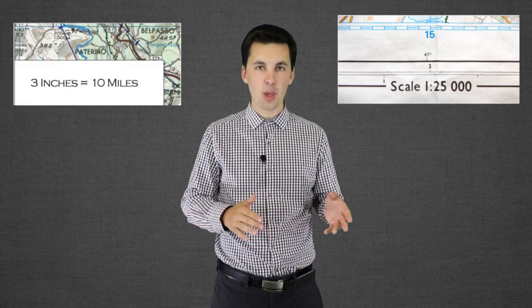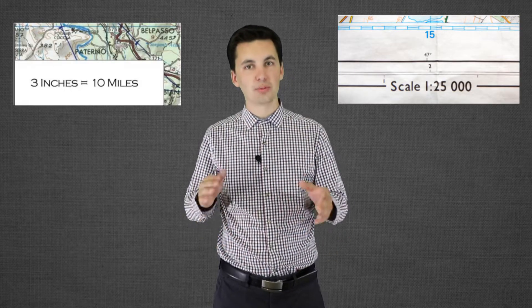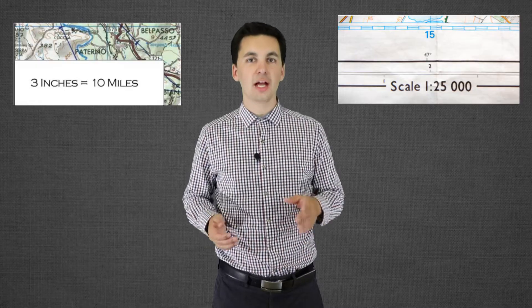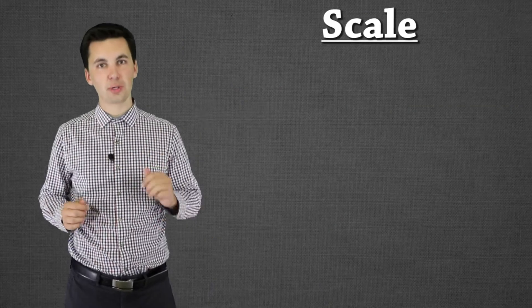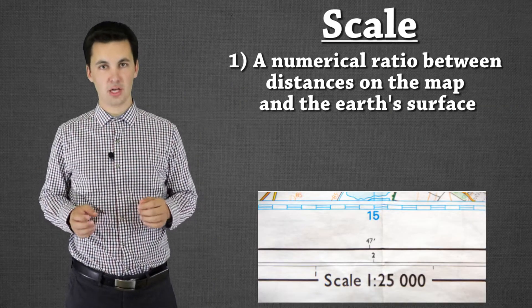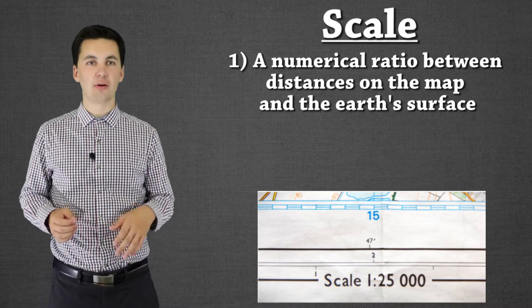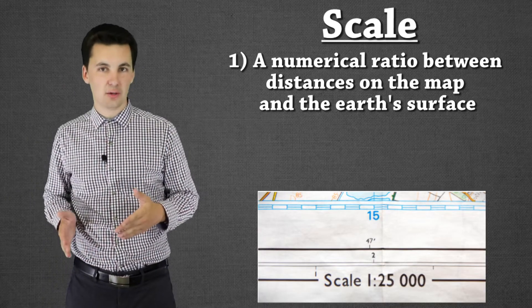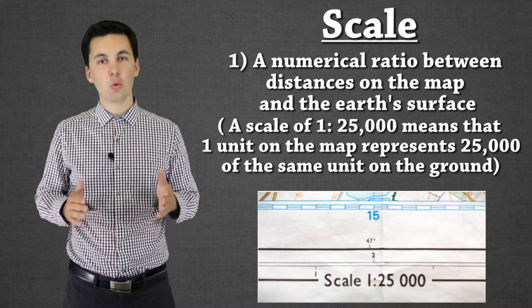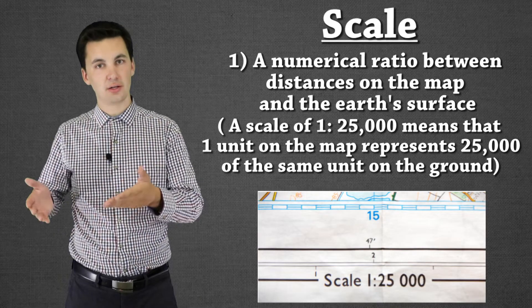Up next we have scale and scale is really important for us to understand because this is going to show us the relationship between what's on the map and in the real world. We'll be able to see the right sizes and distance by using scale correctly and scale can be presented in a variety of ways. Actually three ways. The first one is a number, a ratio. So you might see maps that have like 1 to 25,000. What this means is every one unit on the map equals 25,000 units on the world.